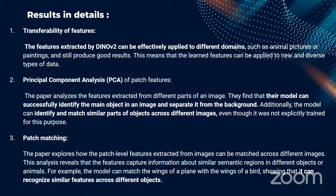Regarding the PCA of patch features, the model can successfully identify the main object in an image and separate it from the background. Additionally, the model can identify and match similar parts of objects across different images. This is closely related to patch matching, where the model can recognize similar features across different objects.